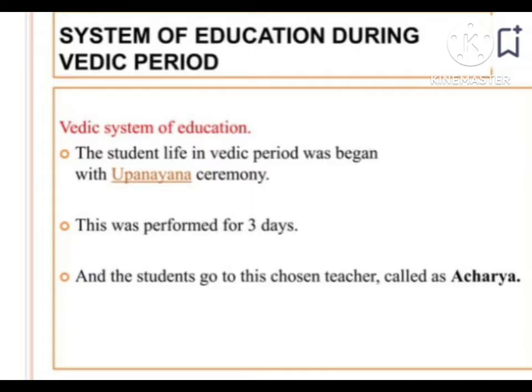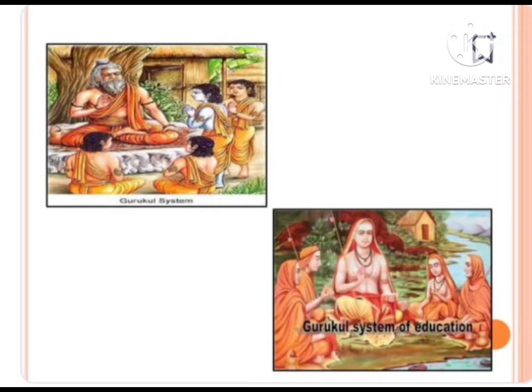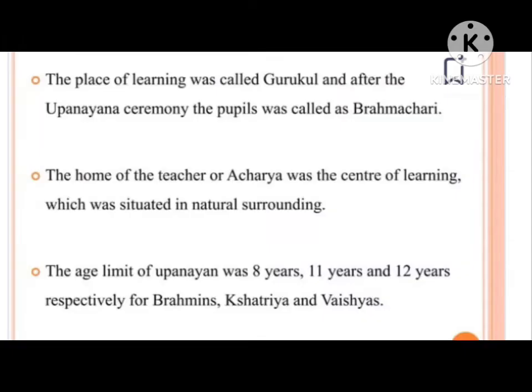The student life in the Vedic period began with the Upanayana ceremony. Students would go to choose a teacher called Acharya, forming the Gurukul system. The place of learning was called Gurukul, and after the Upanayana ceremony, students were called Brahmachari. The age limit for Upanayana was 8, 11, and 12 years respectively for Brahmins, Kshatriyas, and Vaishyas.